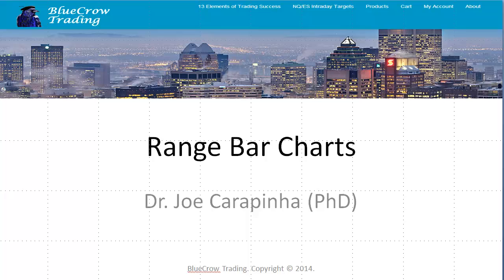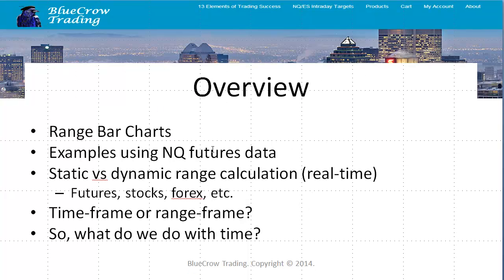In terms of the structure of the presentation, I want to cover the following aspects: to discuss the range bar charts itself and provide a little background. The next is to provide examples utilizing the NASDAQ 100 futures data, the e-mini contract in particular, or we may also use the S&P 500 ES futures data to discuss the difference between minute bars and range bar charts. And I'll provide you a method on how to set range settings for different markets including futures, stocks, and forex.